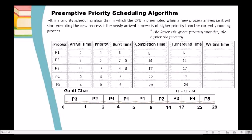Now we compute the waiting time of each process using the formula: turnaround time minus burst time. Waiting time of P1 = 6 − 6 = 0. Waiting time of P2 = 13 − 7 = 6. Waiting time of P3 = 17 − 4 = 13. Waiting time of P4 = 17 − 5 = 12. Waiting time of P5 = 24 − 6 = 18.